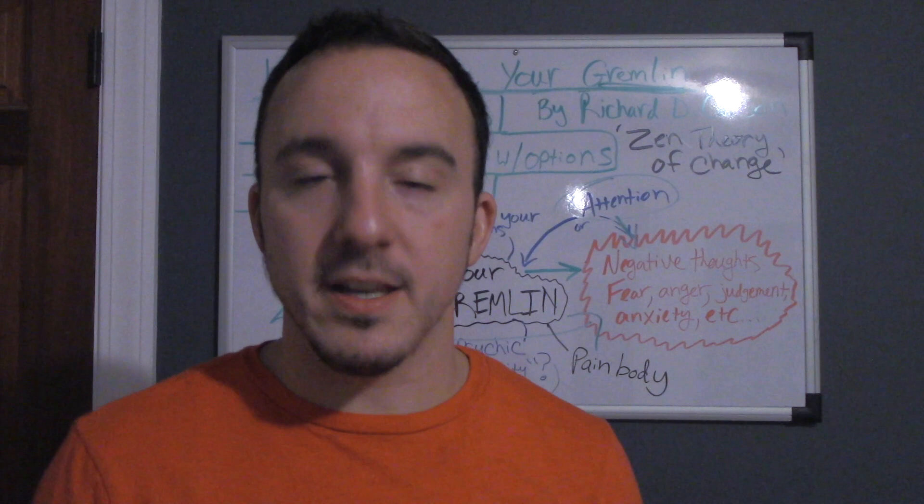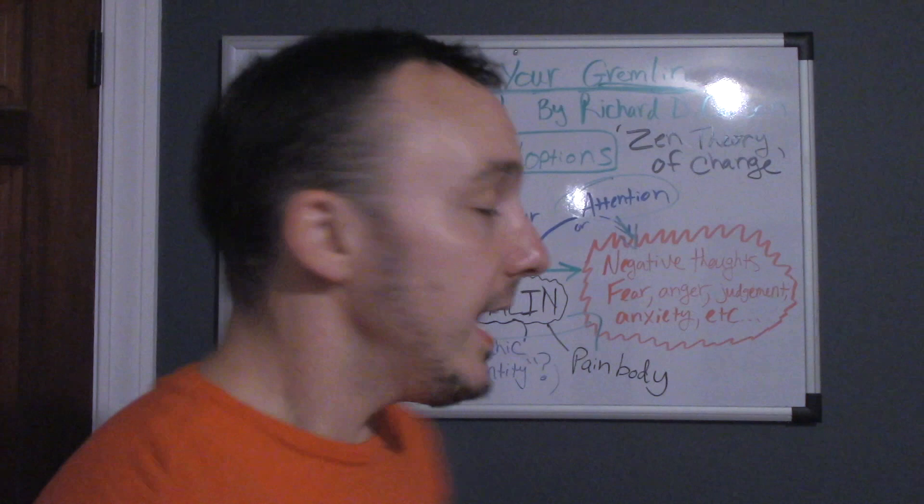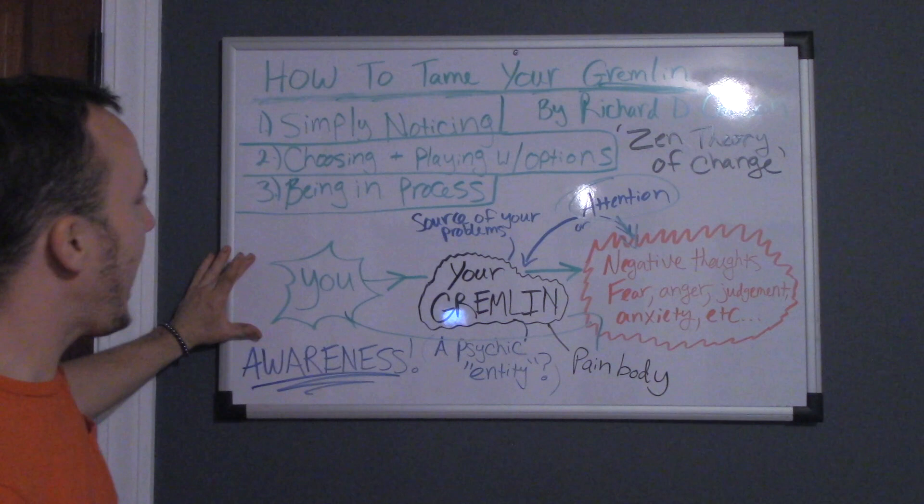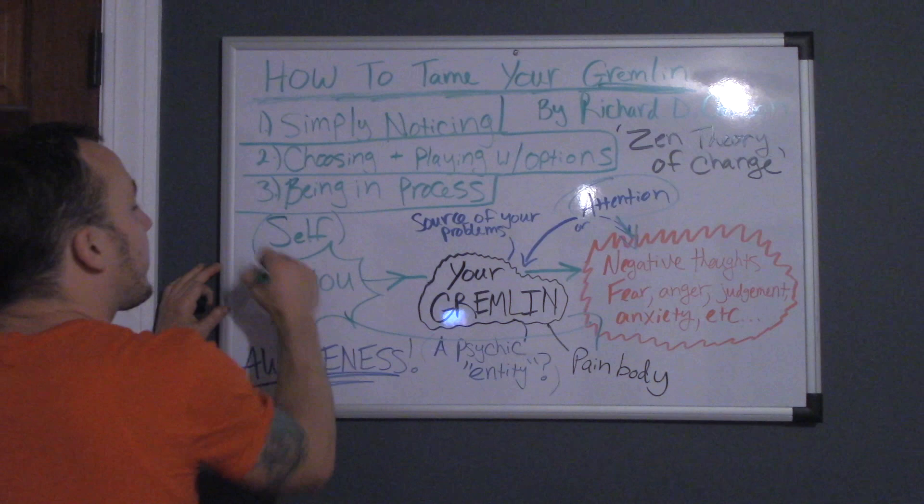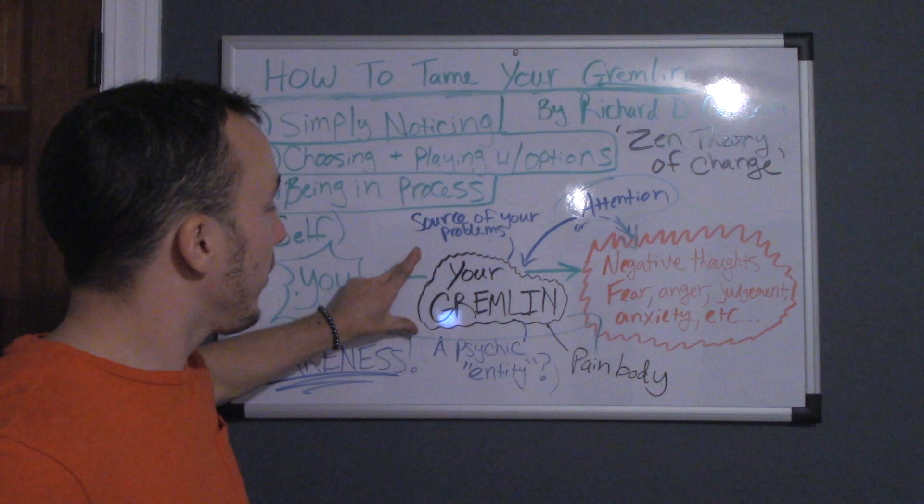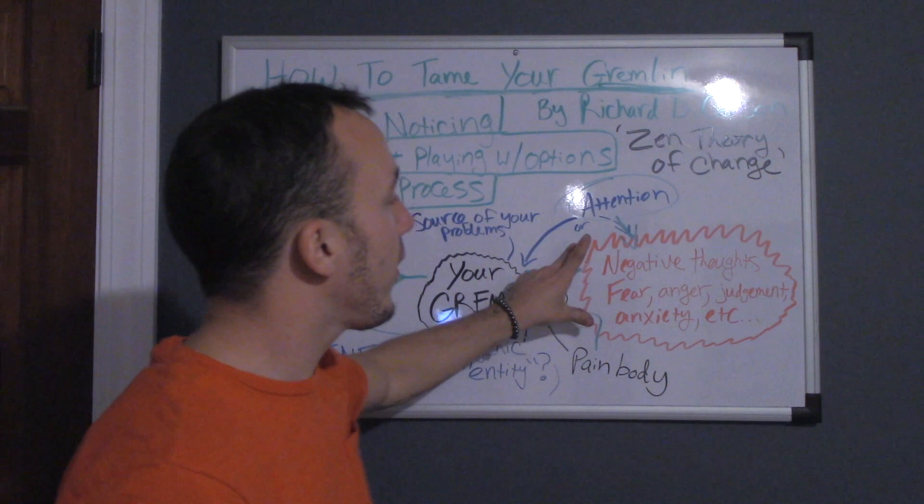So in this book, he talks about how we have ourself right here, our true self. I like the self with a capital S. So you have the self with a capital S and that is you. And then we have this entity within us that is called the gremlin in this book. And over here, we have all the negative thinking, the negative thoughts, the fear, the anger, the judgment, the anxiety, etc.